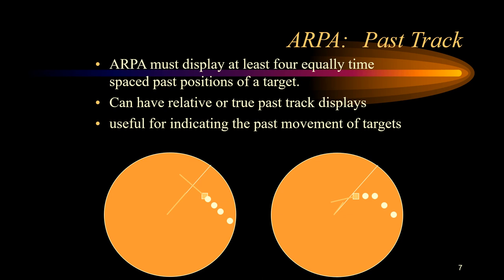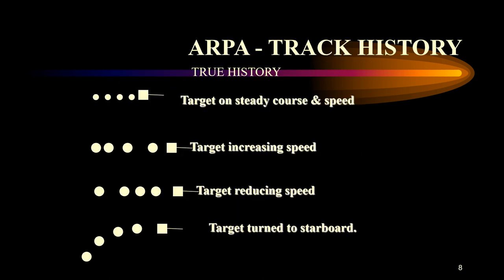The past history is designed to assist the operator in detecting recent maneuvers of targets, and the spacing between the history dots can be selectable by the operator or adjusted automatically with the range scale. As you can see in the diagram, track history can show a turn, acceleration, or deceleration of a target. Target trails or afterglow is a facility with the extracted video which allows the operator to view the past positions of the target.